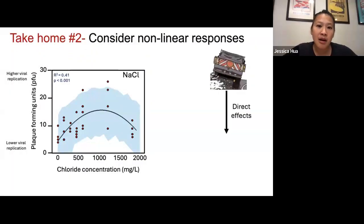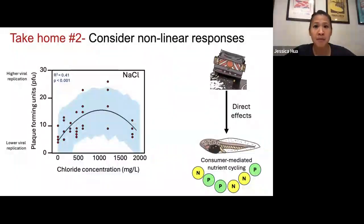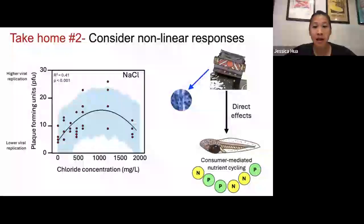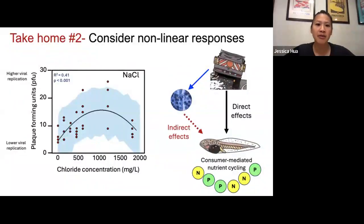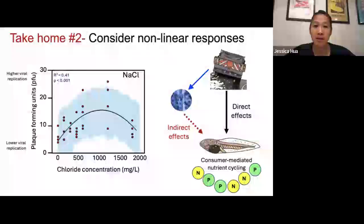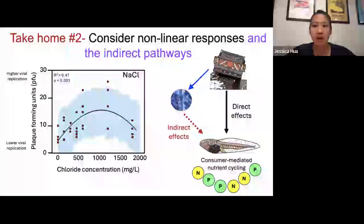The second take-home: we do need to consider these non-linear responses, which are likely more common than we expect. If we assume the effects of pollutants are linear and dose-dependent, we may completely incorrectly parameterize those models and make incorrect predictions about what pollutants are doing to ecological processes. We need to consider non-linear responses by actually testing them, rather than just making assumptions. We also need to consider indirect pathways — pollutants can affect other members of the community, like increasing or decreasing pathogens, which may have indirect effects on ecological processes.